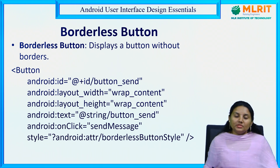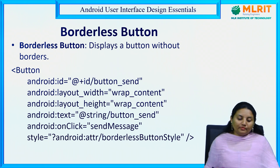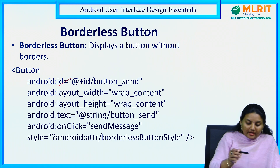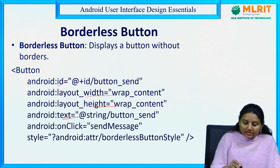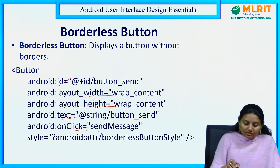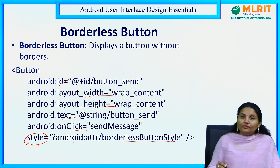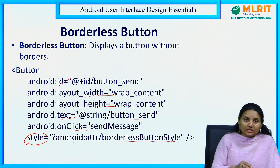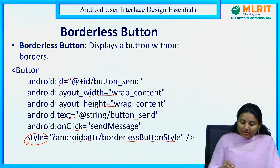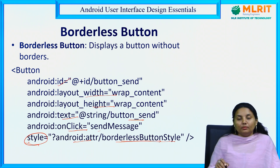Borderless button: sometimes it has to act like a button, but the border should be hidden. So you display the button without borders. You give id, layout_width, layout_height, the text to be displayed, and onClick. The key attribute you have to add for a borderless button is the style attribute: android:attr/borderlessButtonStyle. This is a predefined styling within Android Studio's button property. You give style as @android:attr/borderlessButtonStyle and you get the borderless button.